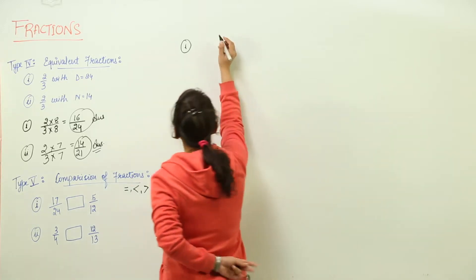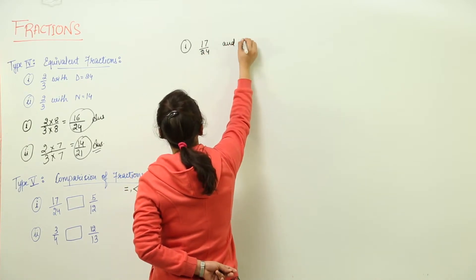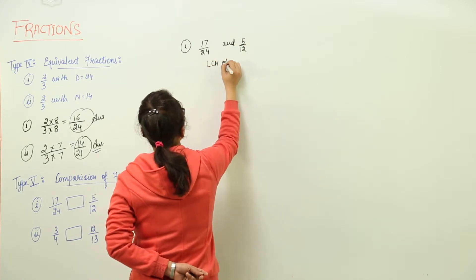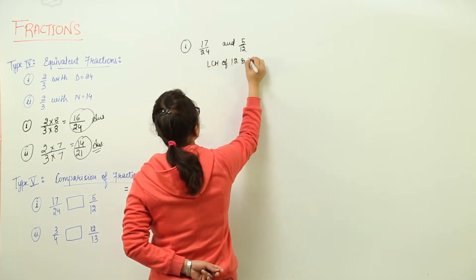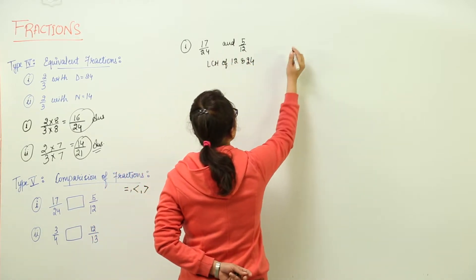Let us do that. We have the fractions as 17 upon 24 and 5 upon 12. Let us take out the LCM of both the denominators, that is 24 and 12.